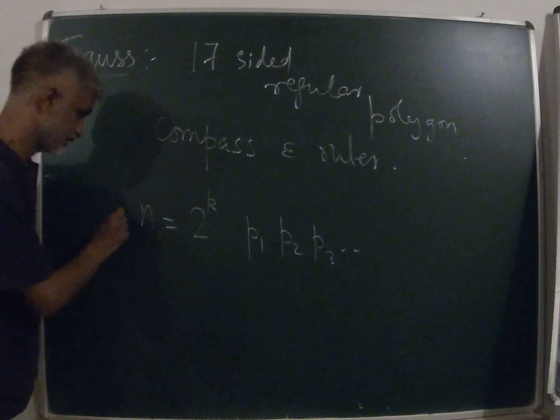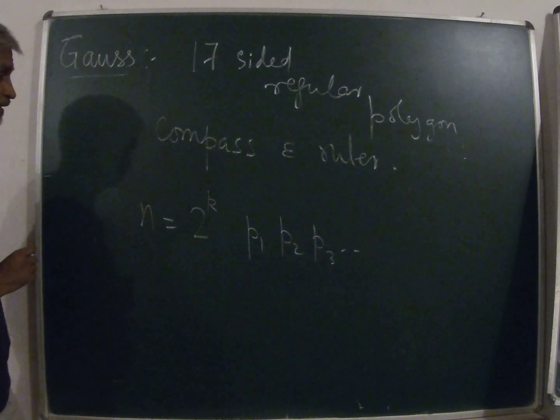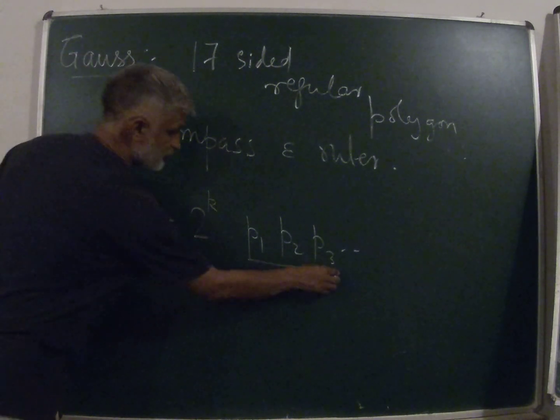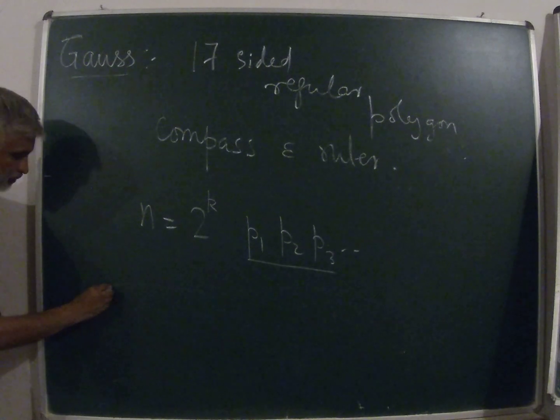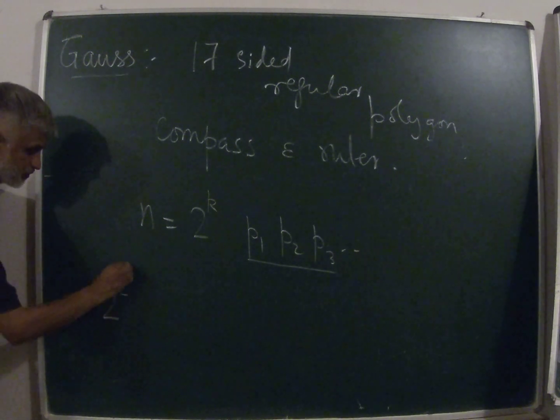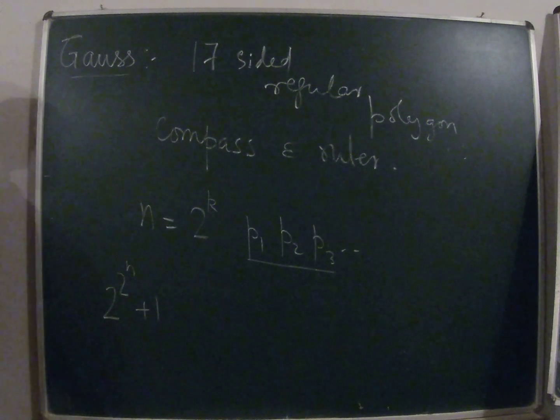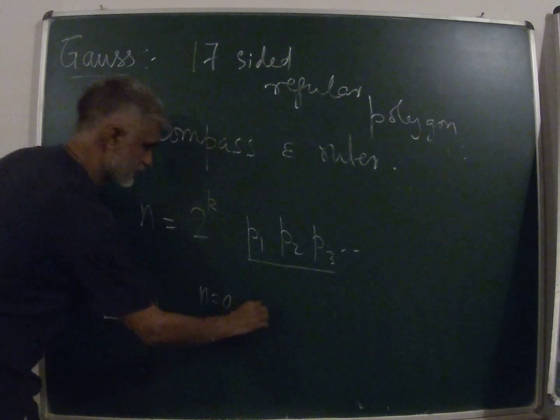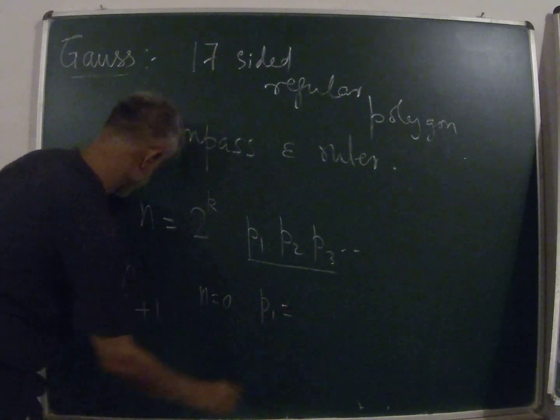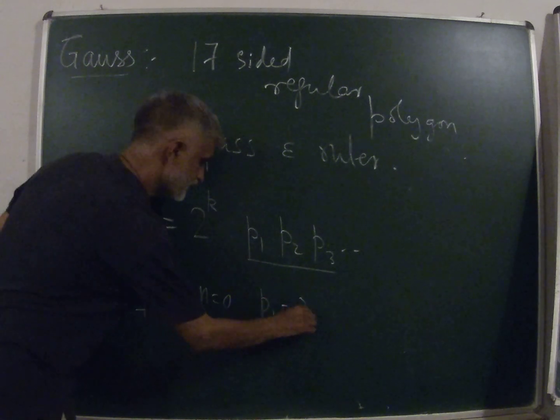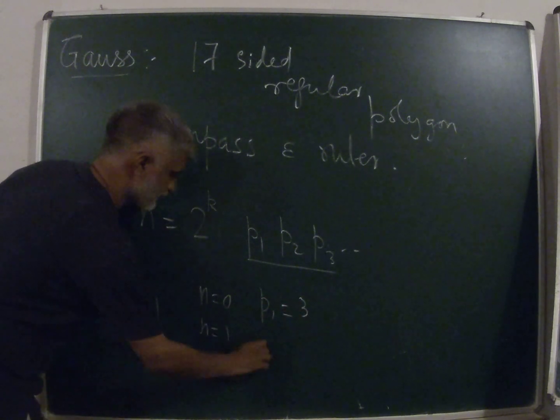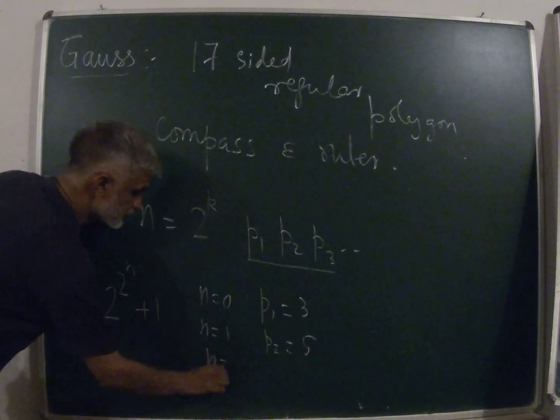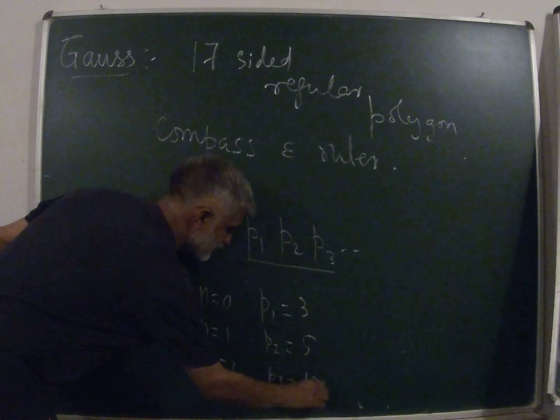If the number of sides is a product of distinct Fermat primes multiplied by 2 raised to some k, then this particular polygon can be constructed by compass and ruler. These are Fermat primes, which are of the form 2^(2^n) + 1. For instance, when n equals 0, you have the Fermat prime equals 3; when n equals 1, we have the Fermat prime equals 5; and when n equals 2, we have the Fermat prime equals 17, and so on.